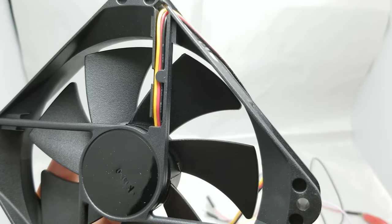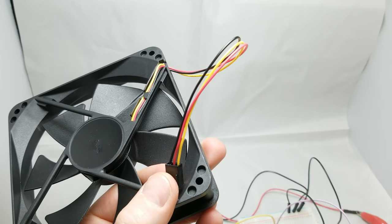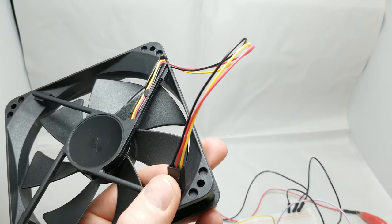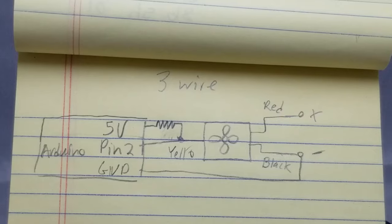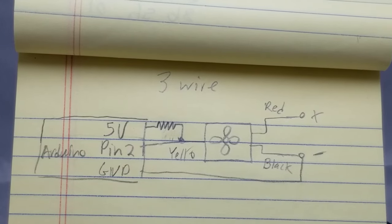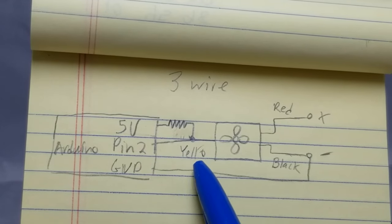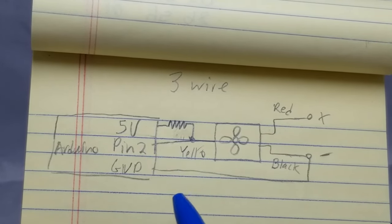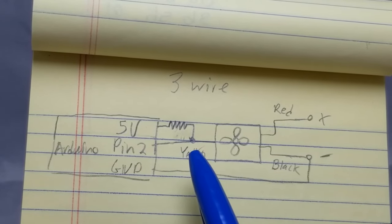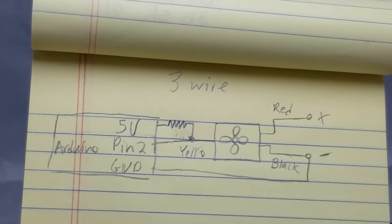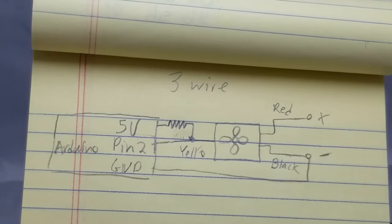A three-wire fan allows us to keep track of the fan speed. Using a pull-up resistor, we can connect the yellow wire to the Arduino, and measure two pulses per revolution. For this demonstration, I'm going to connect the red and black wire of the fan directly to my power supply, and that way I can control the speed of the fan by varying the voltage. On the Arduino side, we'll connect the yellow wire to pin 2, which is capable of interrupts, and we will use a 10-kilo-ohm resistor to pull the wire up to 5 volts. Also make sure to connect the ground on the Arduino to the negative on the power supply.